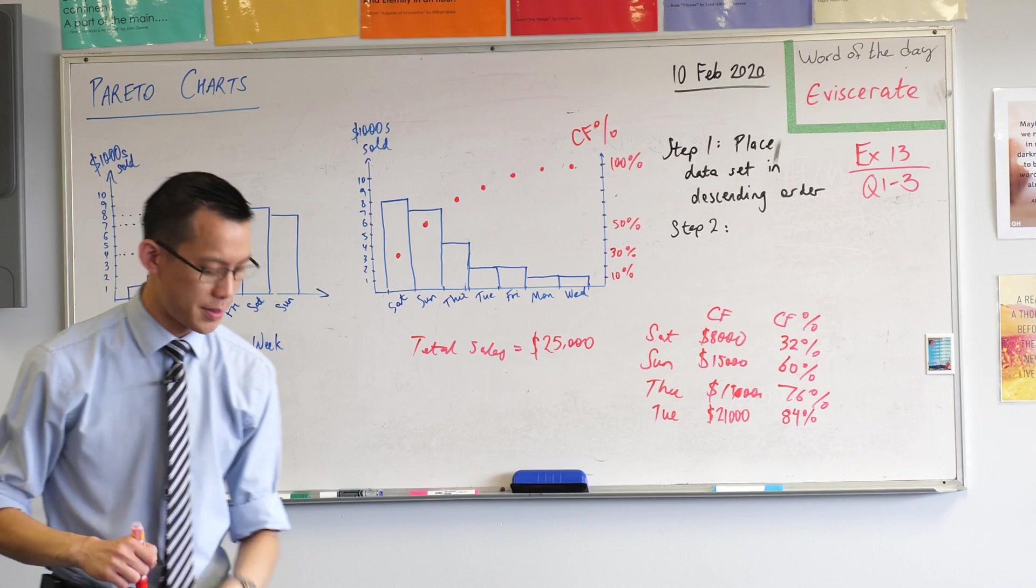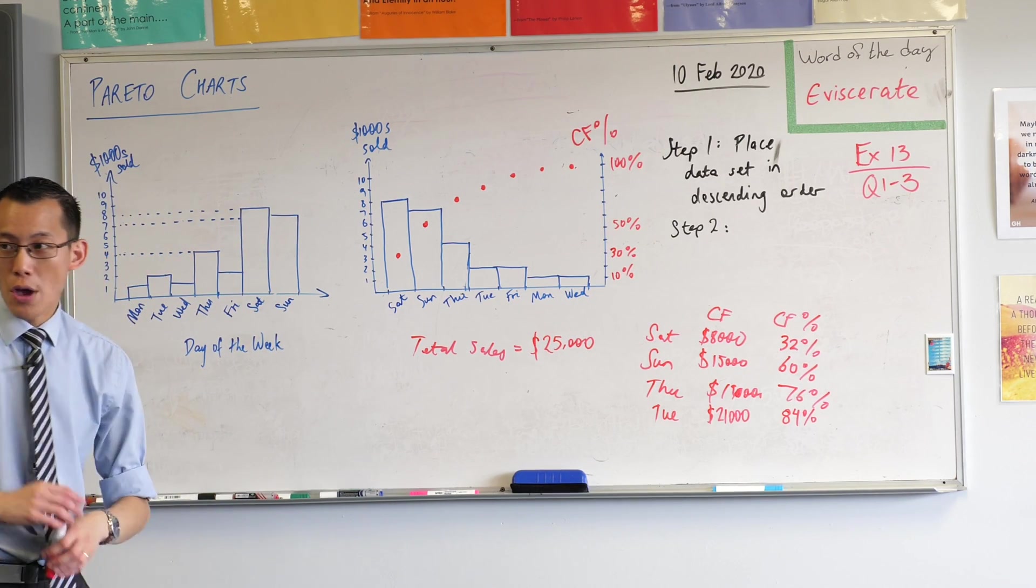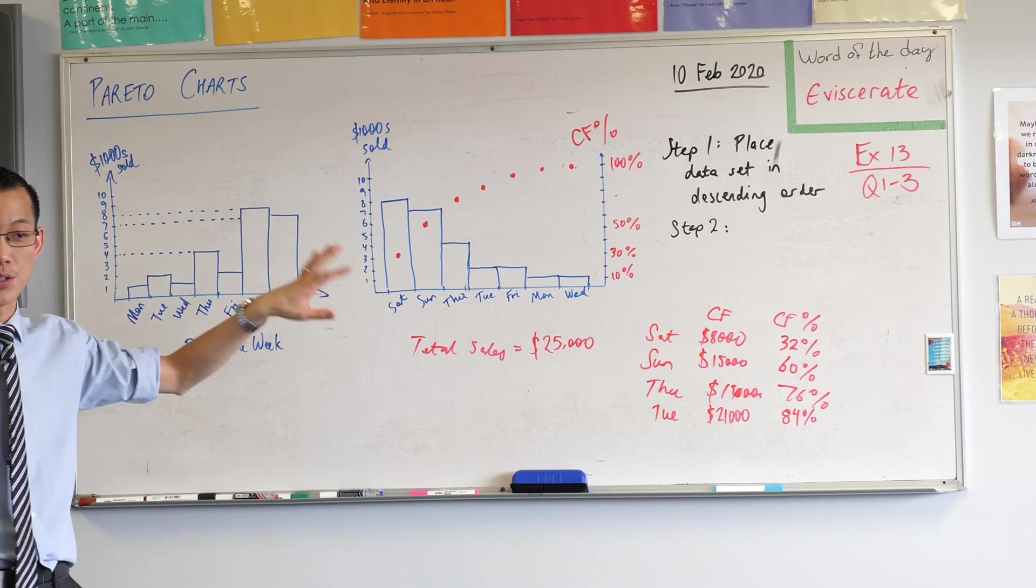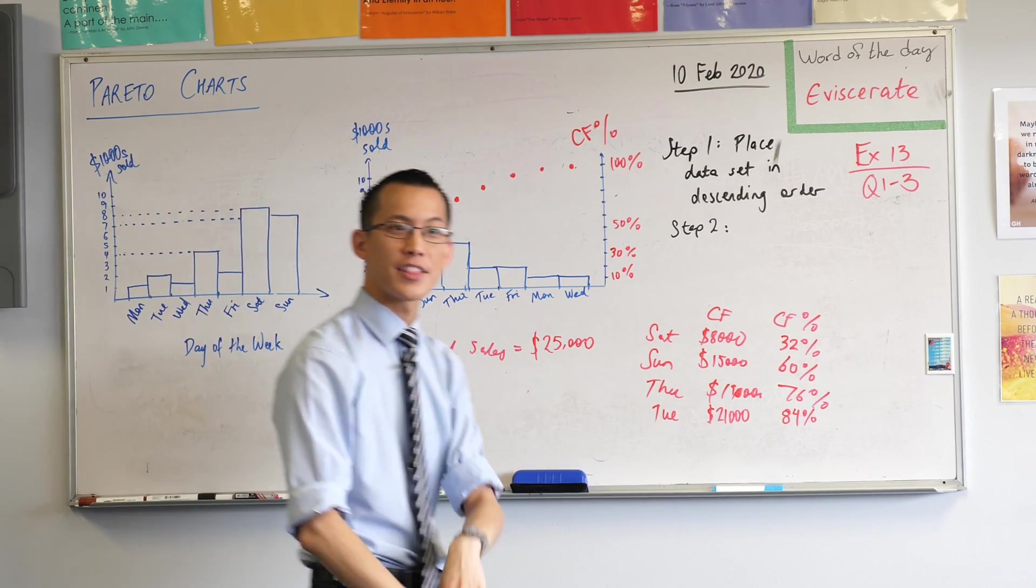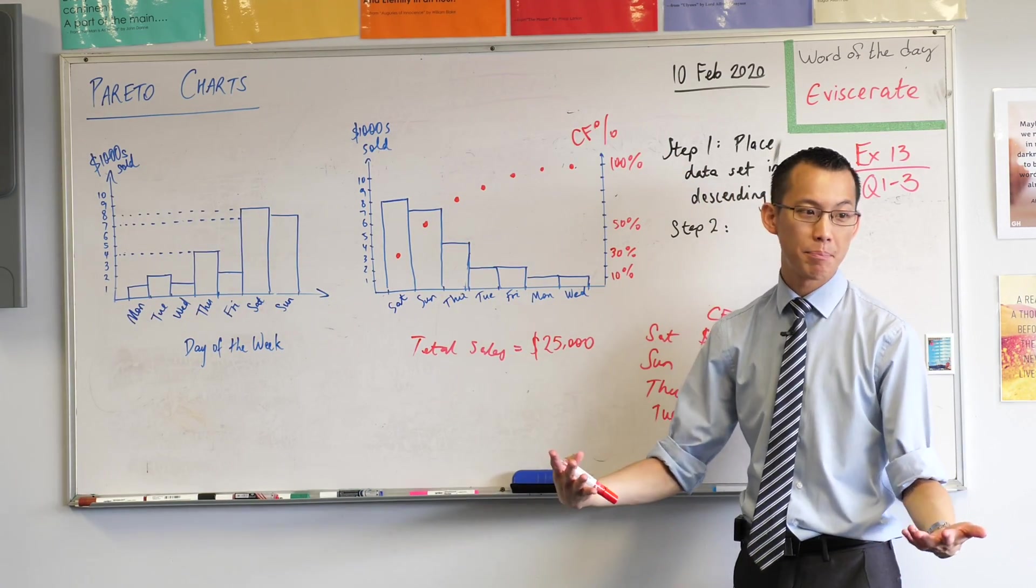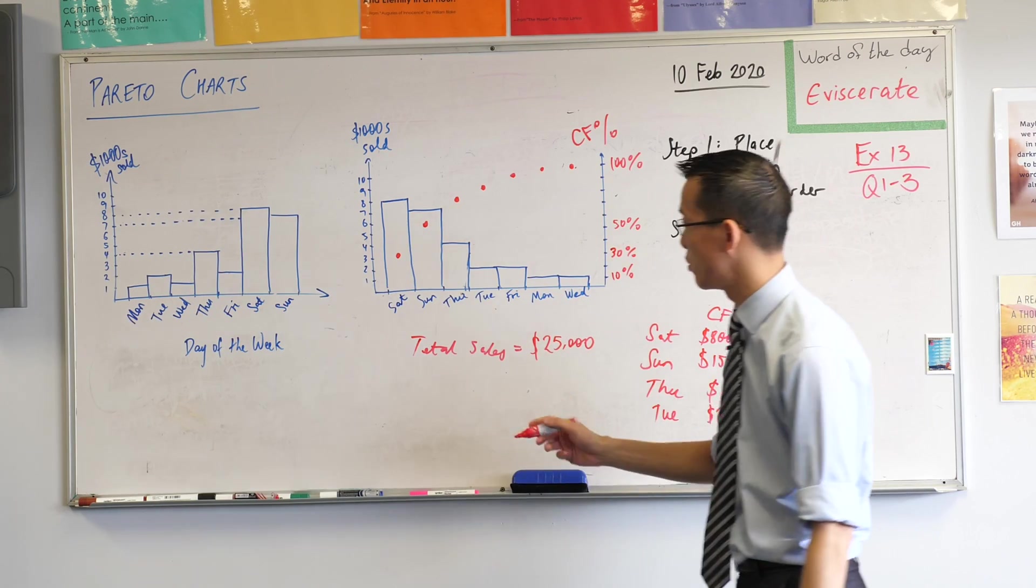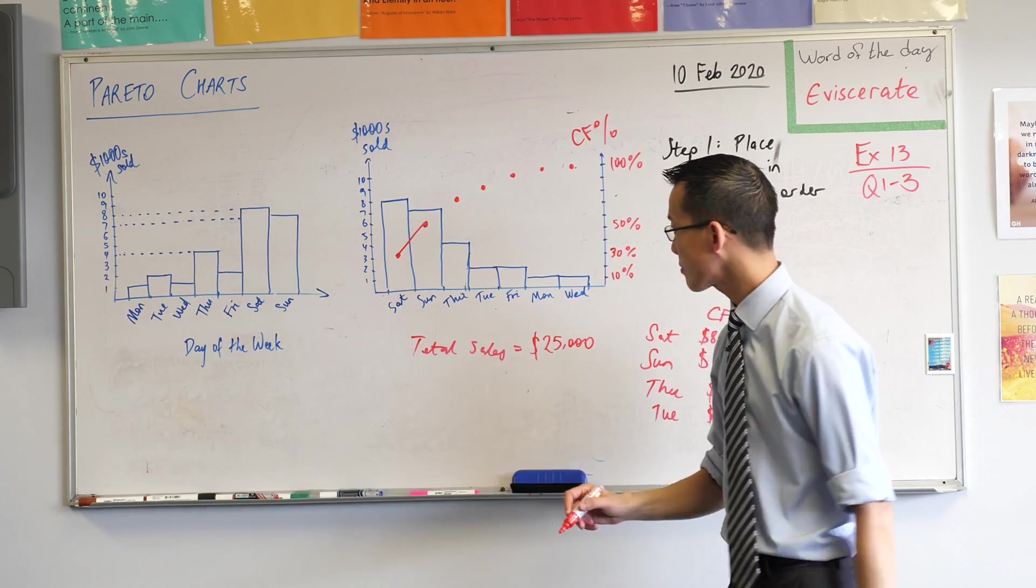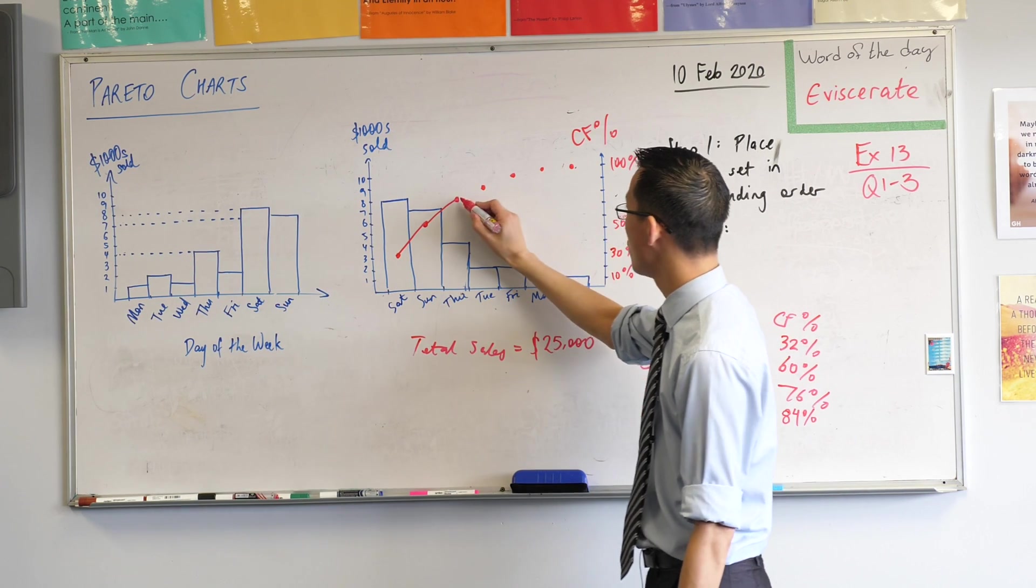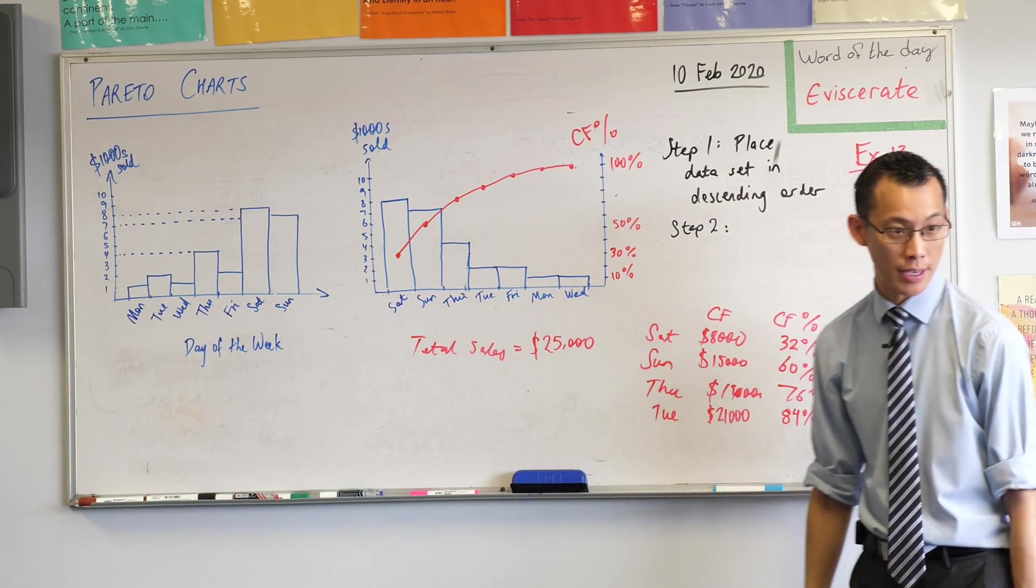Okay, can I get your attention again please? So hopefully by now, you have most if not all of these data points, the cumulative frequency percentages graphed on. Here's the last part that will complete the Pareto chart. We're going to take these and we're going to join them up into a polygon of sorts. Just straight lines will do. So I'm going to go from Saturday to Sunday, from Sunday to Thursday, Thursday to Tuesday. And you get the idea. You end up at 100%.